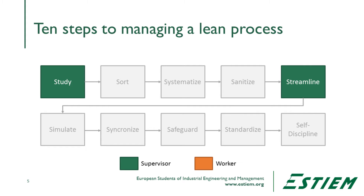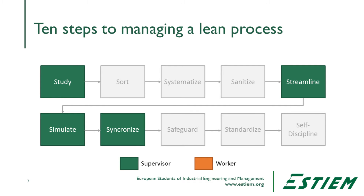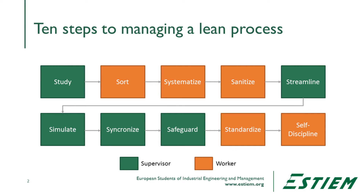What you have to do is streamline the work process, simulate or test the system, synchronize the flows, and safeguard or mistake-proof the process. Then, at that point in time, you can standardize it and put it into a process of self-control, self-management, or self-discipline.